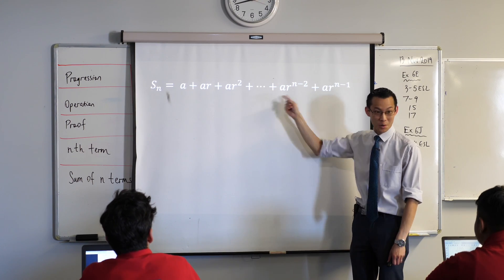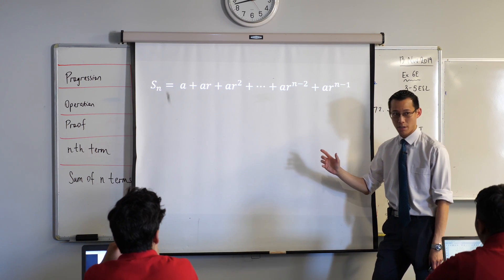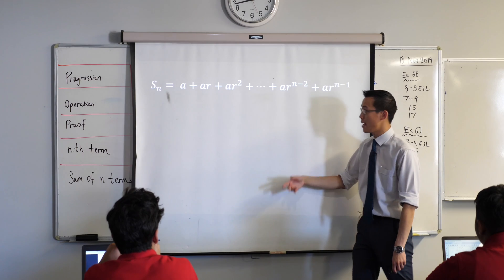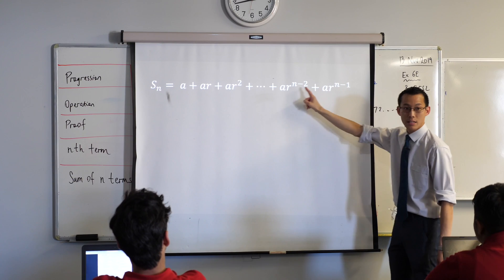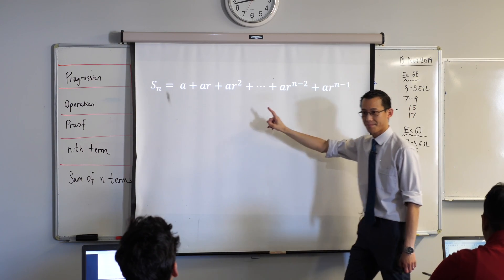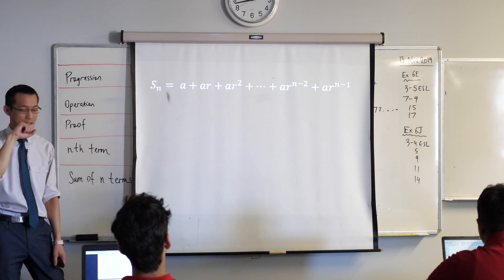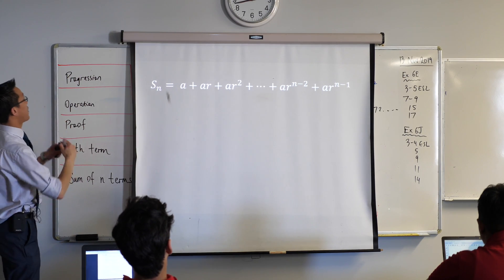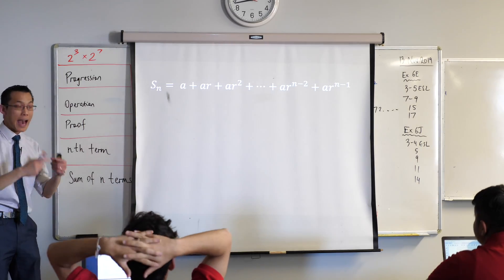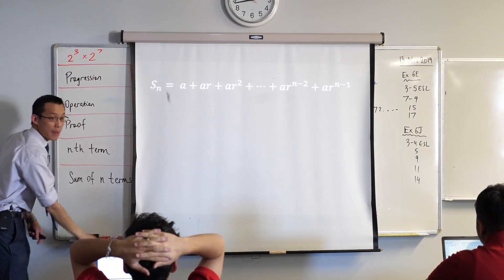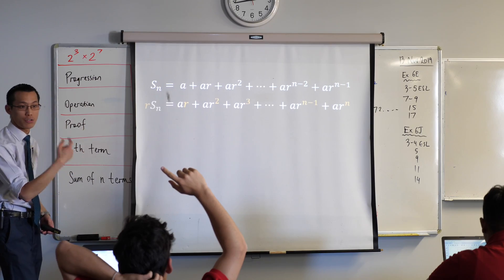Just before I show you what it's going to be, think about what you predict happens next when you multiply every term by R. How will the indices change? When you multiply by the same base what do you do with the indices? If I had say 2 to the power of 3 times 2 to the power of 7 what do you do with those indices? You add. I'm multiplying by r to the power of 1 so what should I do to every indices? Add 1.